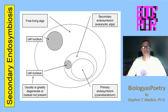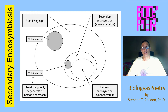Secondary endosymbiosis is where a cell acquires a second cell that already possesses an endosymbiont. Typically, this is seen where you have a eukaryotic cell that's acquiring a second eukaryotic cell that carries particularly a plastid as its endosymbiont, and thus the original — the larger of the eukaryotic cell — becomes a eukaryotic algae.